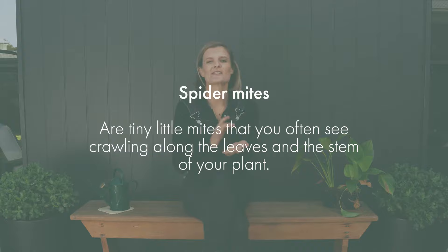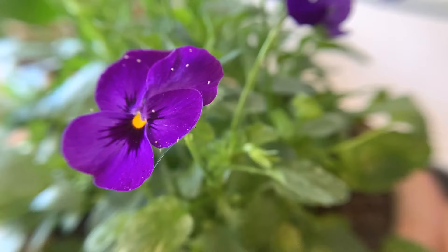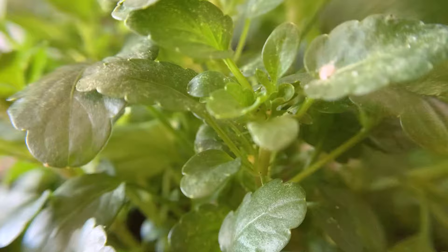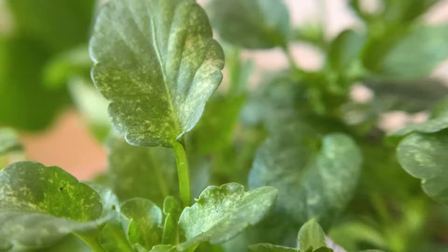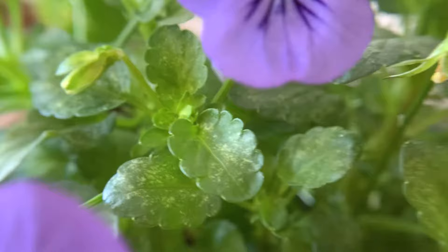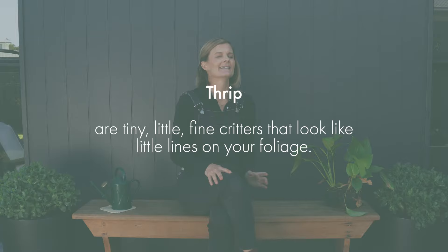Spider mites are tiny little mites that you often see crawling along the leaves and the stem of the plant, and a really good way to identify these is to look out for a white webbing, much like a spider web. These little mites love hot dry air and unfortunately they love your indoor plants. They use their little fangs to slurp up the fluid from the healthy plant. If spider mites are left for too long they'll actually cause brown or yellow spotting on your leaves or patchy discolouration on the foliage.